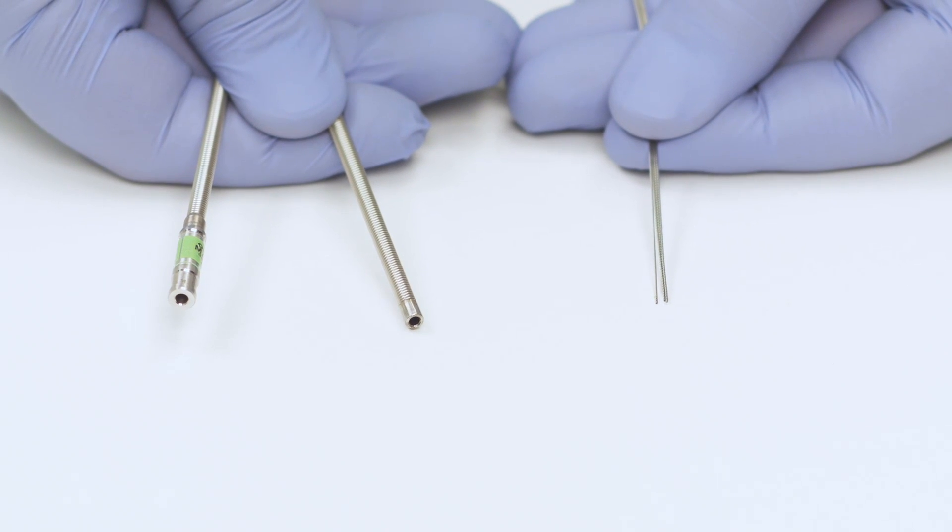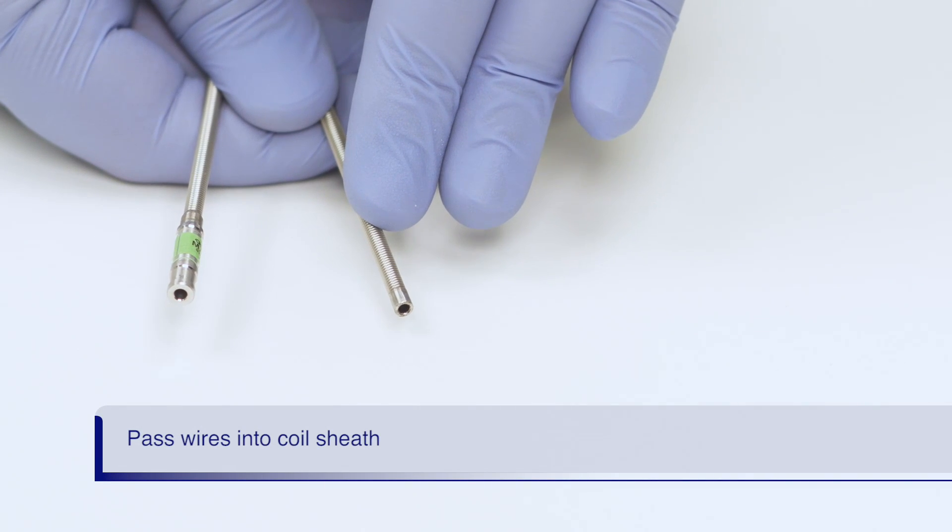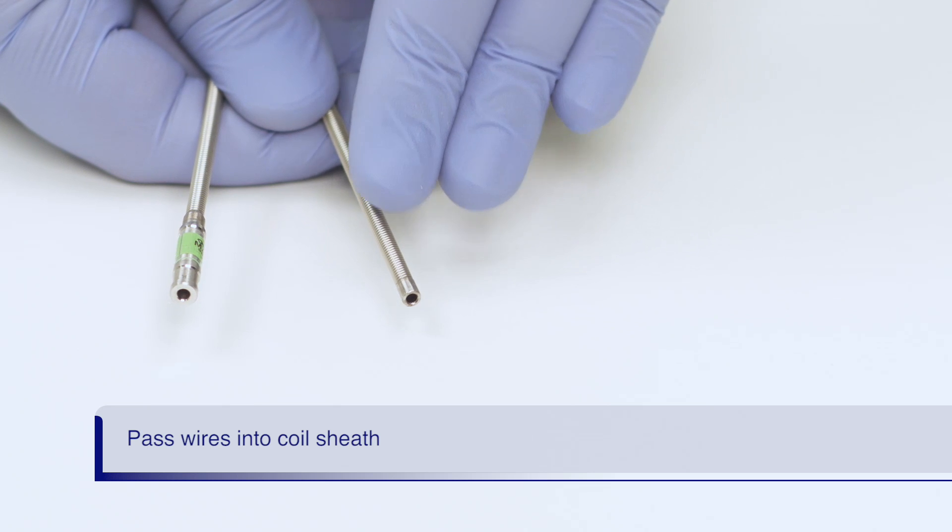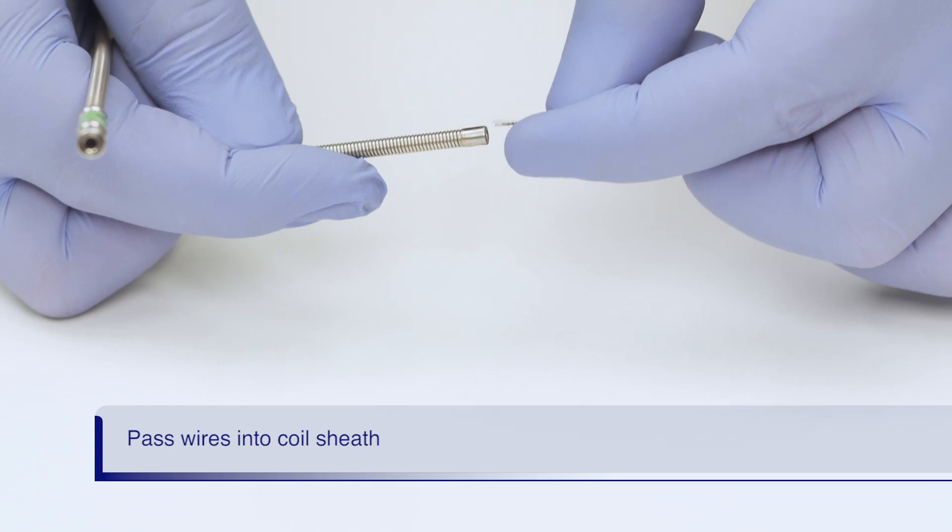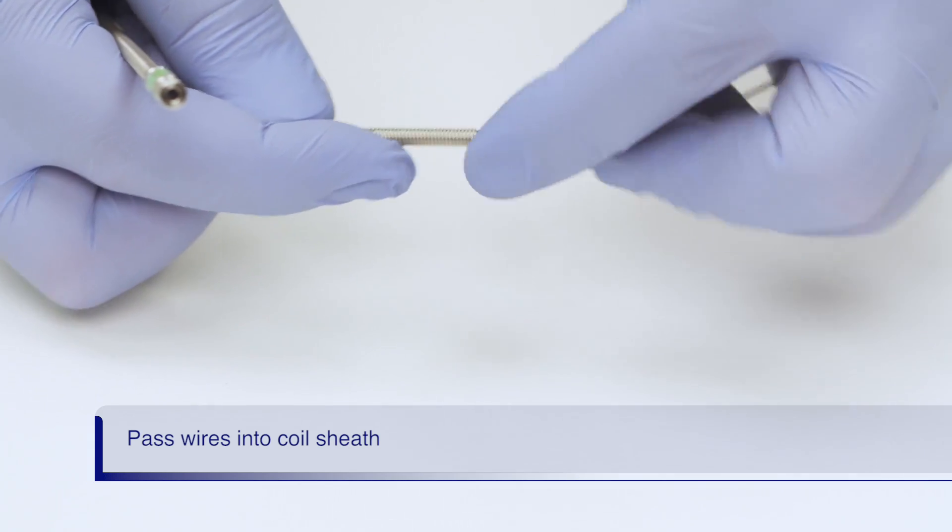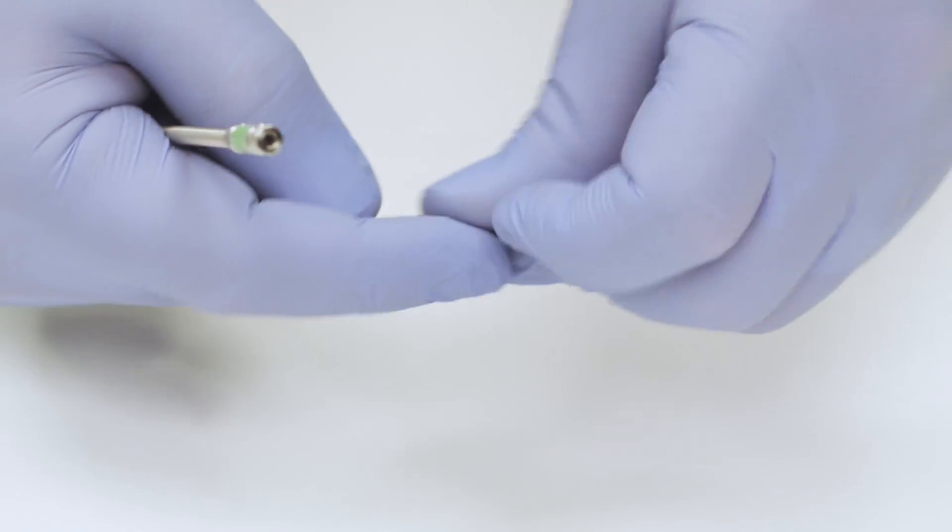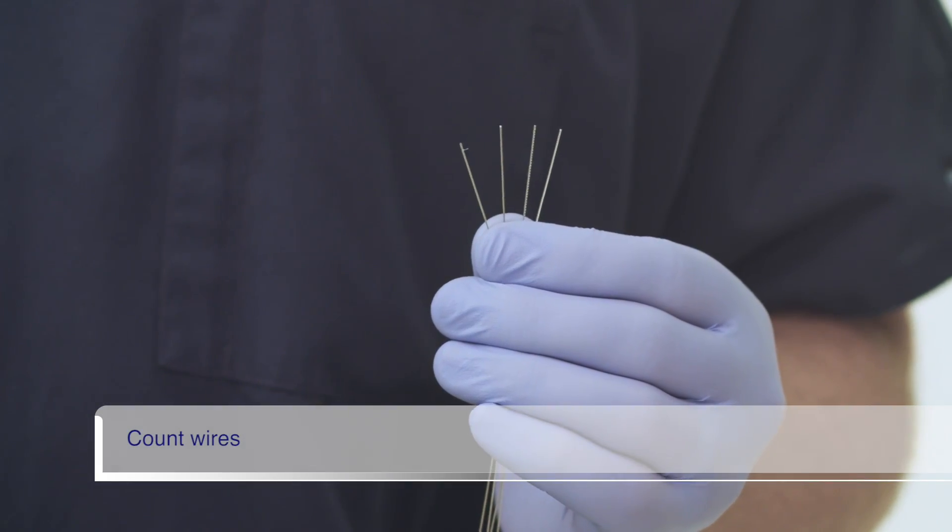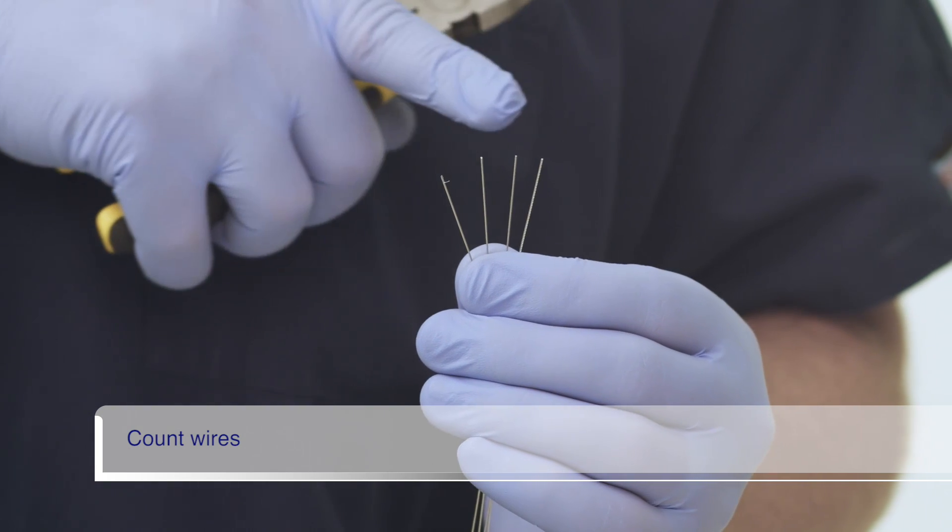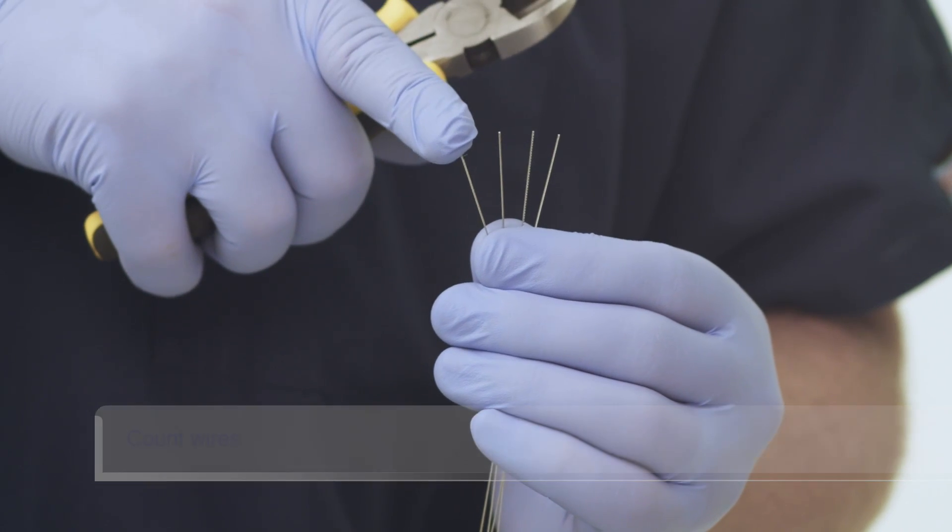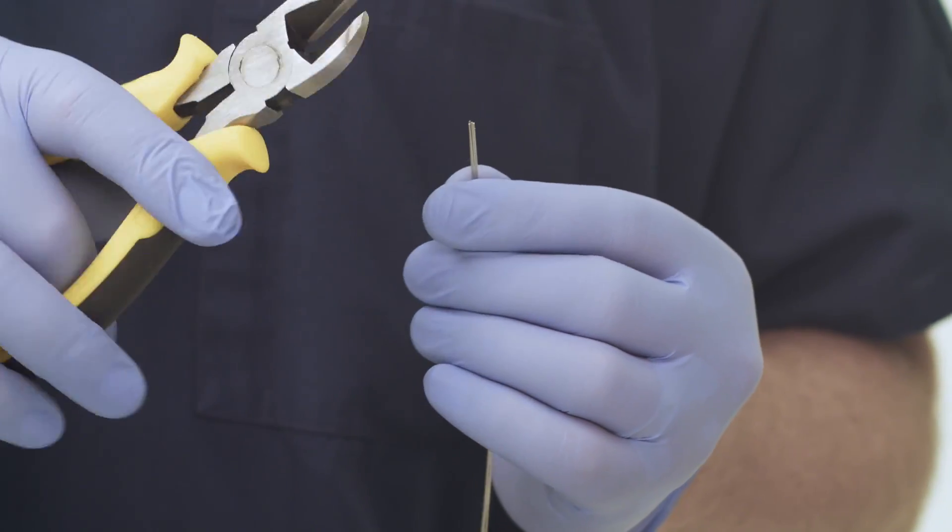The wires are now loaded into the coiled sheath. The wires are advanced through the unmarked distal end of the sheath. The end with the green band is the proximal end and is connected to the handle later on. Ensure you keep the wires straight and together as you advance them through the sheath. Once the wires emerge from the proximal end of the coil sheath, count them to ensure all four wires are present. If any wire ends have become frayed, trim them with the wire cutters.